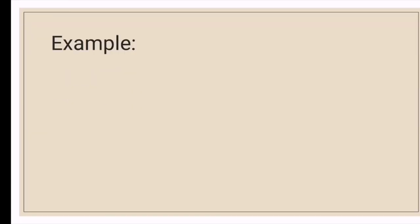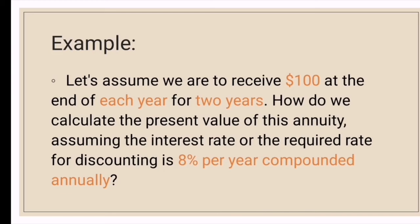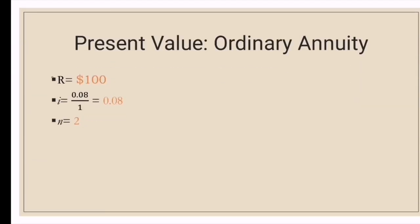Let's take this example. Assume we are to receive $100 at the end of each year for 2 years. How do we calculate the present value of this annuity assuming the interest rate, or required rate for discounting, is 8% per year compounded annually? This problem is an example of ordinary annuity since there is a regular payment of $100 payable at the end of each term. The regular payment R equals $100, the interest rate per period i equals 0.08 divided by 1 equals 0.08, and since payments are made at the end of each year for 2 years, the total number of conversion periods N equals 2.